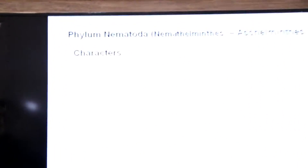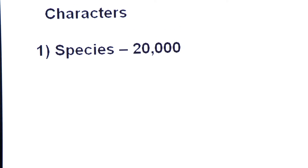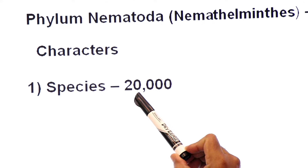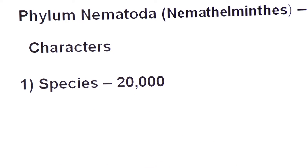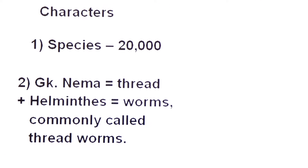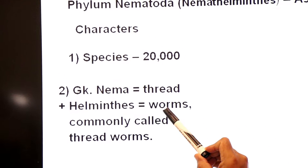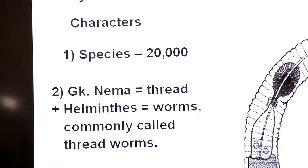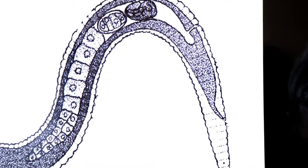Now, characteristics of Phylum Nematoda. According to our textbook of Biology, Sindh Textbook Board Jamshoro, there are 20,000 species of Phylum Nematoda. Nimithelmenthes has Greek origin: 'nema' means thread, 'helminthes' means worms, so they are commonly called thread worms because their body is thread like. Look at the body shape of nematode.